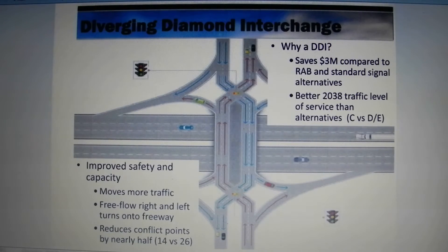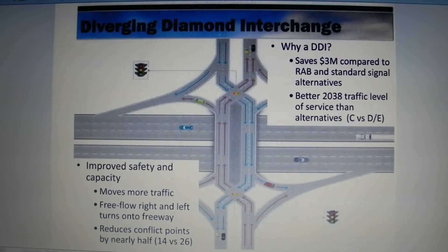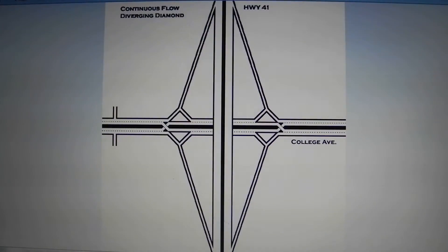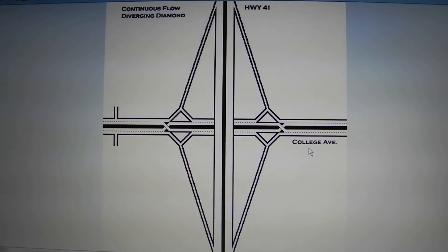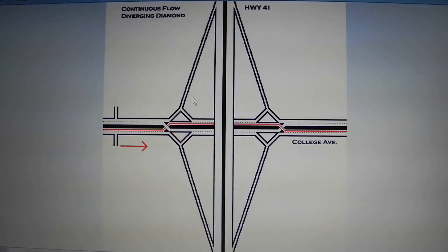I'm going to explain how a continuous flow diverging diamond interchange works. This is a diagram of a diverging diamond interchange from the Wisconsin DOT website. This is a continuous flow diverging diamond — the benefit of this one over the regular diverging diamond is this one doesn't have stop lights, so you just keep going and never stop. I'm going to use the intersection on College Avenue and 41 in Appleton to explain how it works as an example.